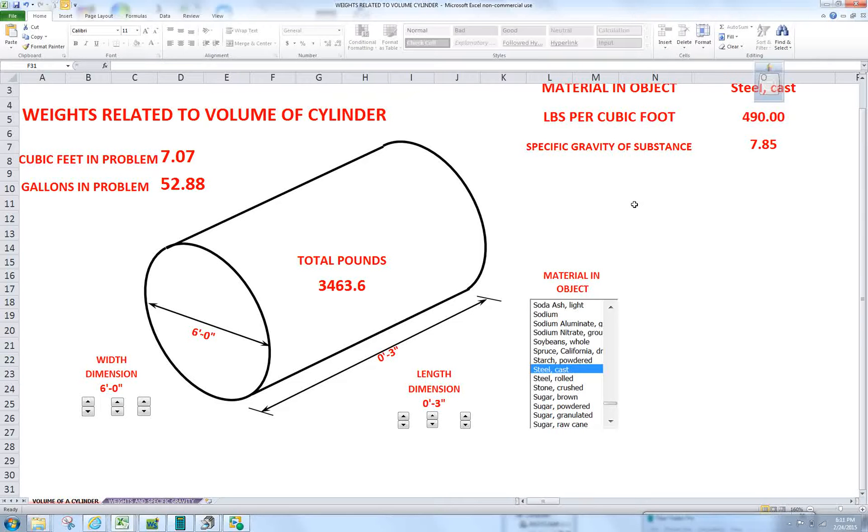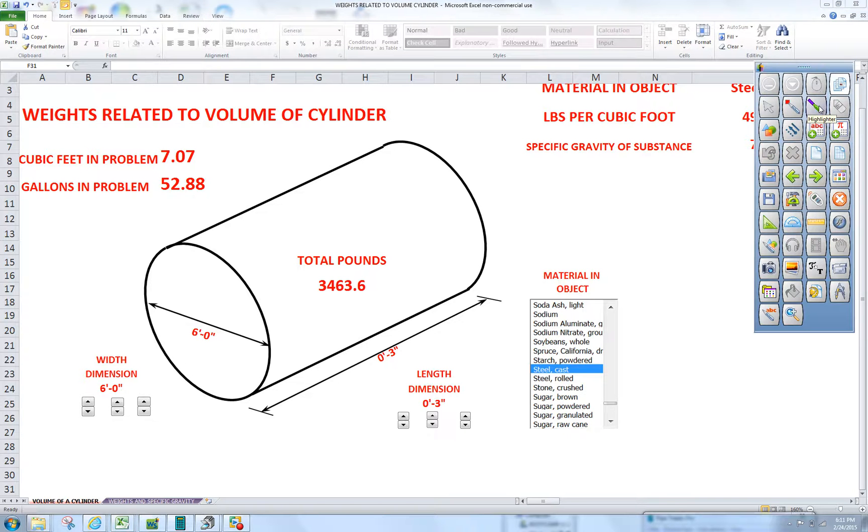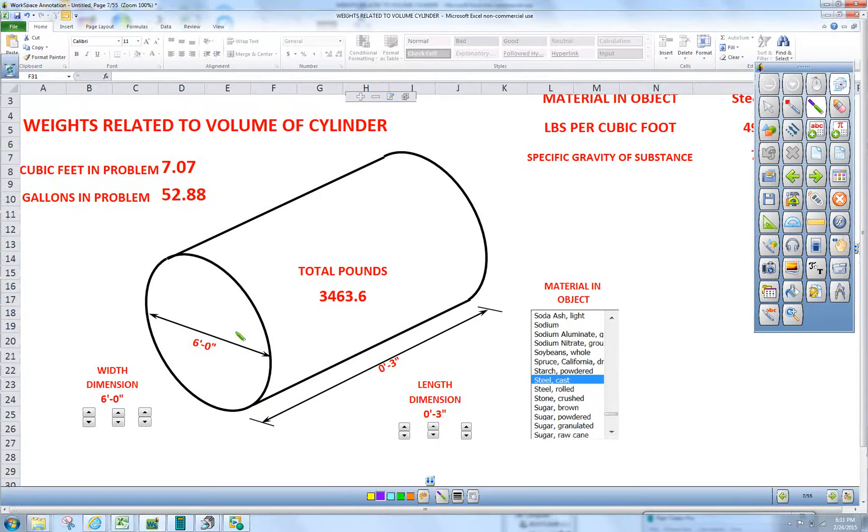Today we're going to figure weights. We're going to figure the weight of this blind here. This blind happens to be six foot. It's a huge chiller, maybe a heat exchanger in a refinery. It's six feet wide, three inches in depth. It's made of steel.